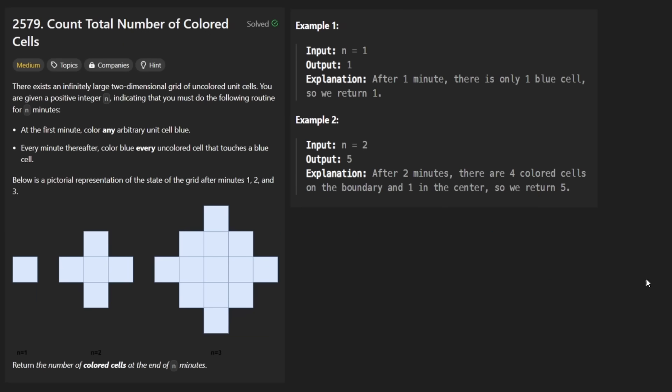So anyways, the idea behind this problem is pretty simple. We're just given a parameter n. It's going to be a positive number between one through 10 to the power of five. So depending on what it is, we want to return the total number of cells in this grid.